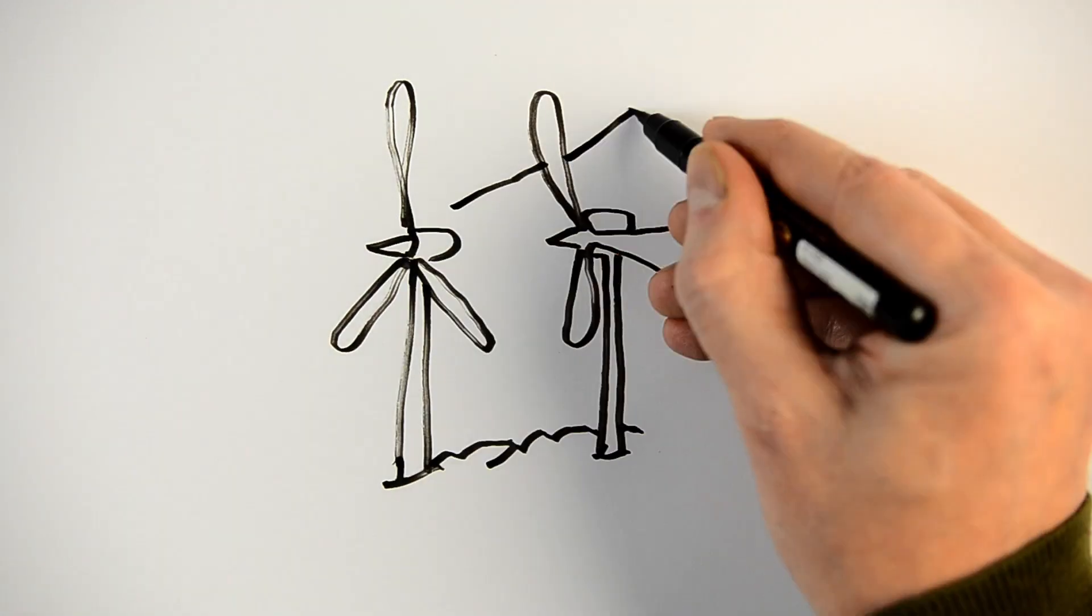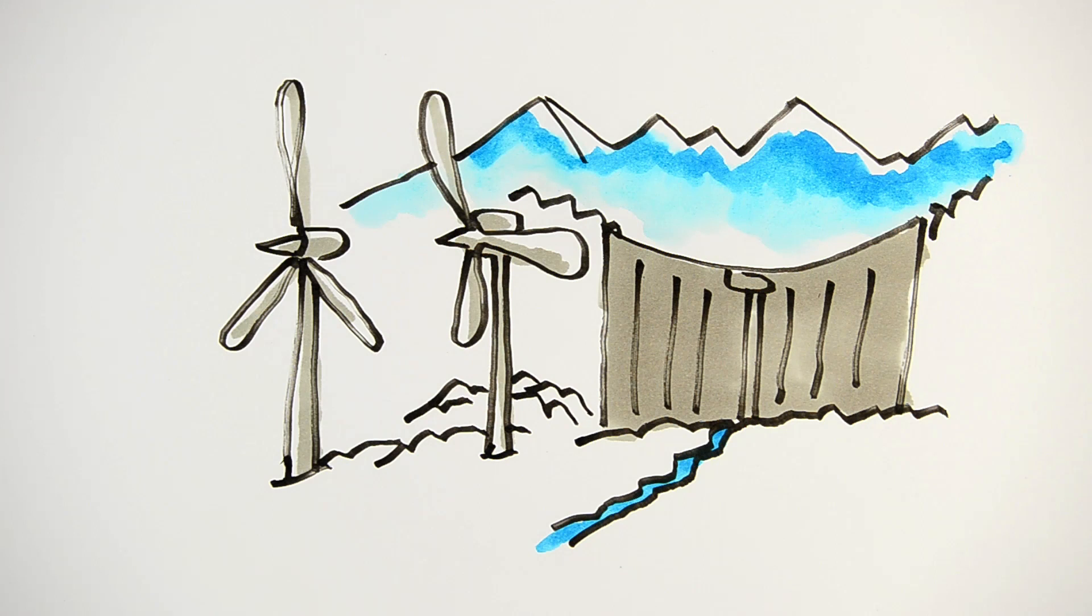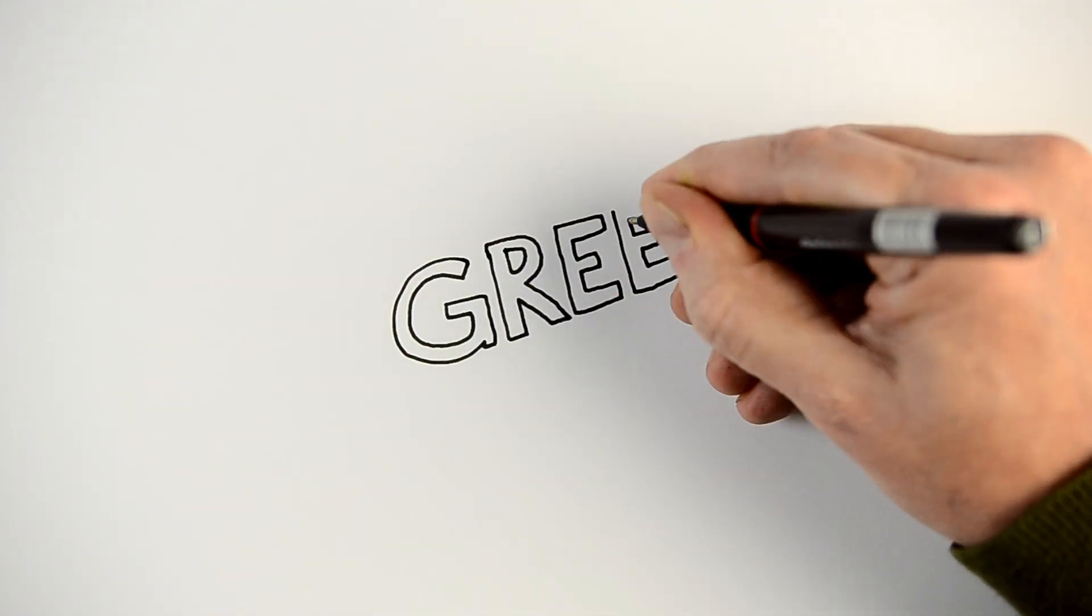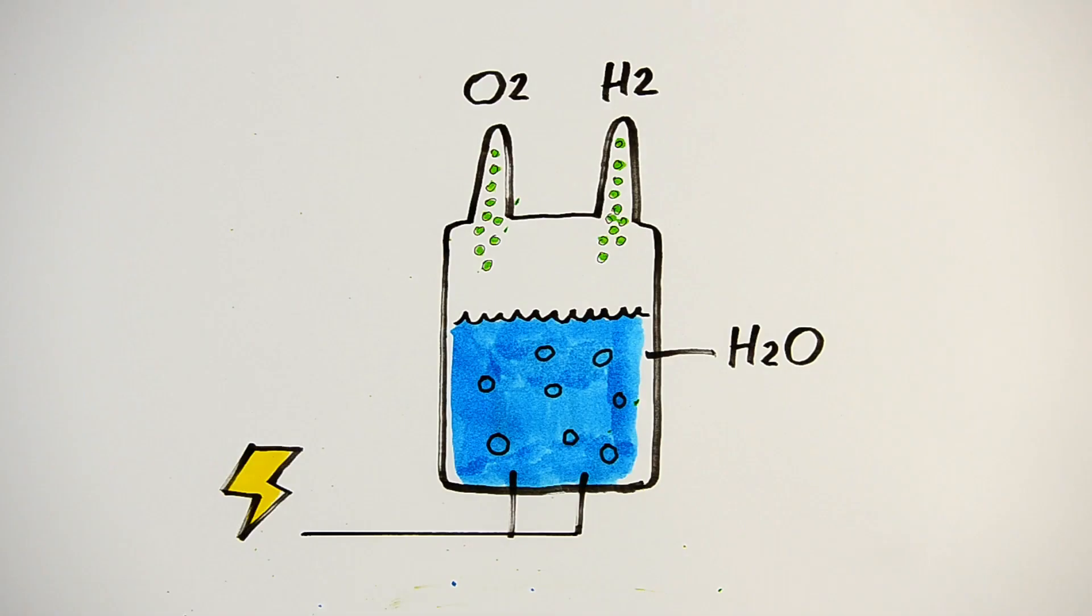But hydrogen can also be produced using renewable energies like wind and hydropower. That's what we call green hydrogen. Green hydrogen is produced through electrolysis, which uses electricity to turn water into hydrogen.